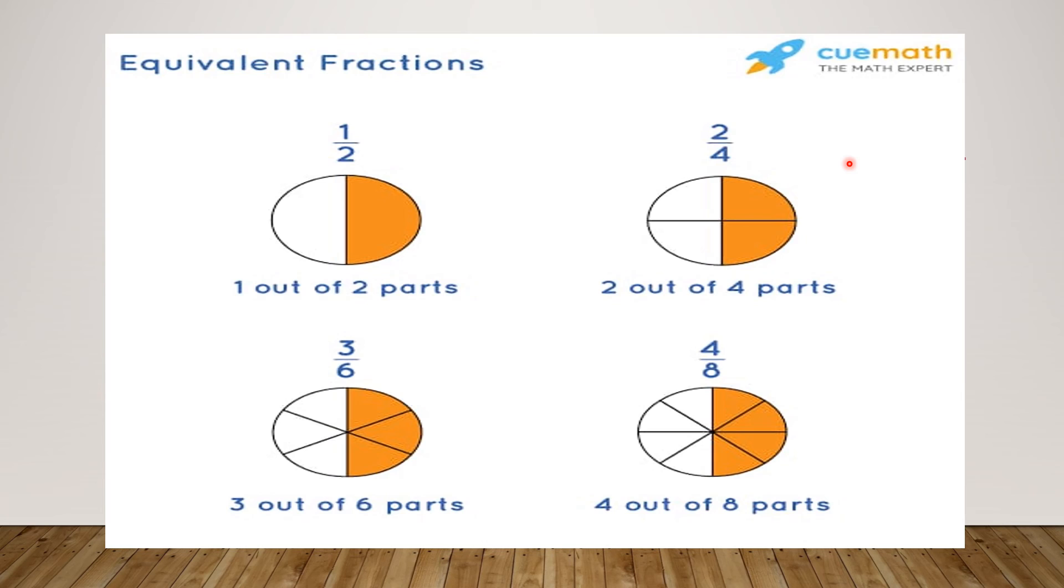That means 1 by 2. When this fraction you will divide it with 3, you will get again half. This fraction when you will divide it with 4, you will get again half. So this proves that they all are equivalent fractions.